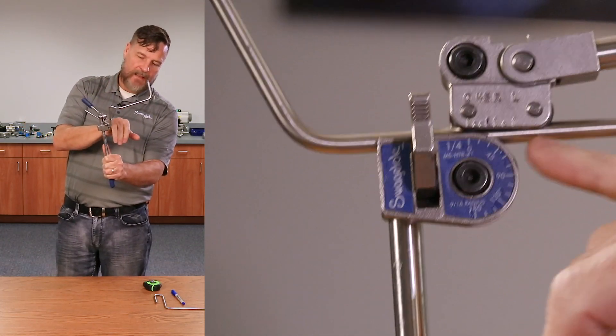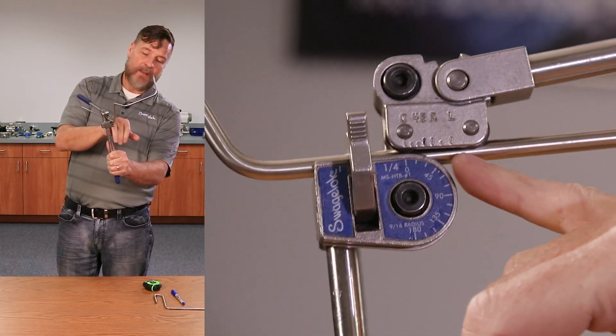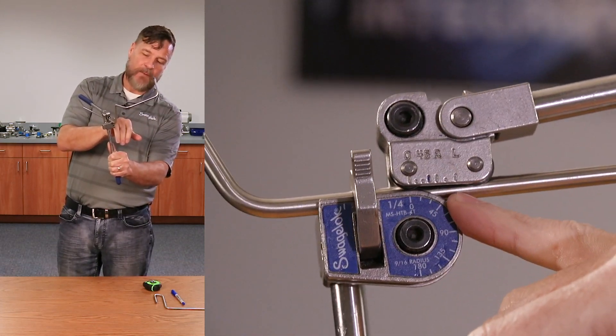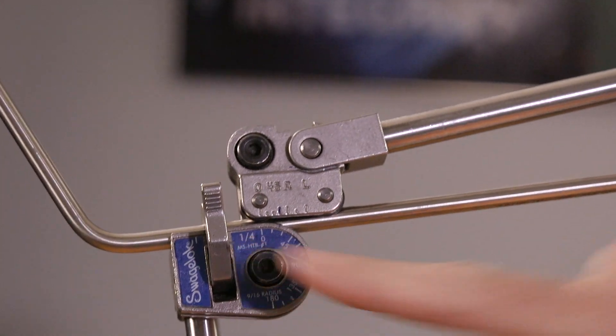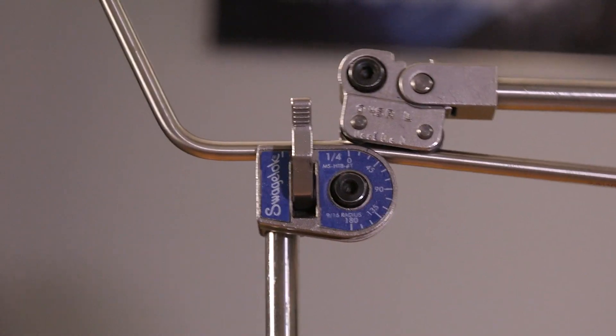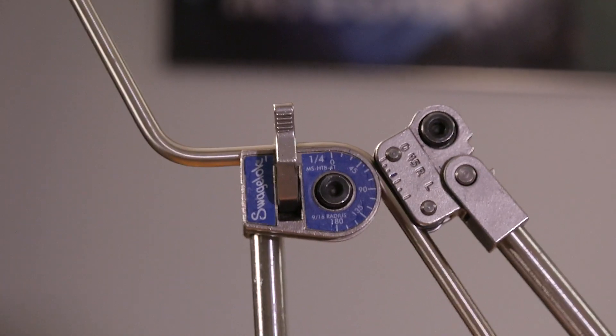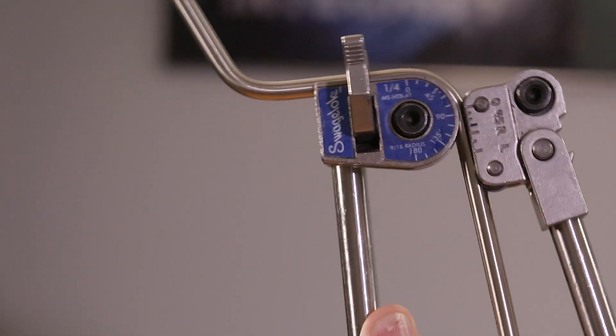Once it's touching the rollers, generally I'll have a bend mark in here. I'll make sure my bend marks line up where they need to be. Then I'm going to take the zero on the hand tube bender. I'm going to take that down to the 90-degree mark right there. That's how we do it.